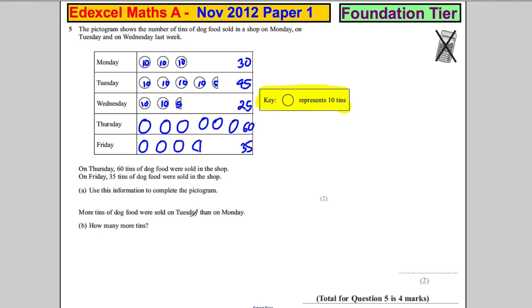More tins of dog food were sold on Tuesday than Monday. How many more tins? Well, on Tuesday, we had 45. On Monday, we had 30. If we subtract these, it's 15 more. So 15 more.